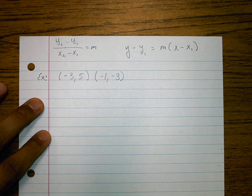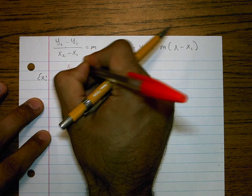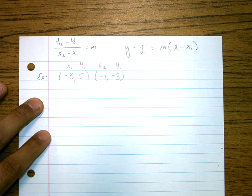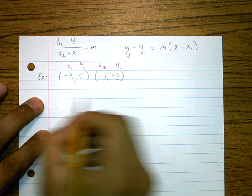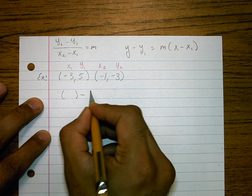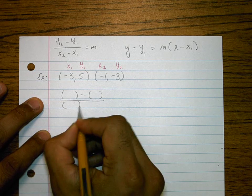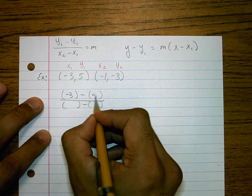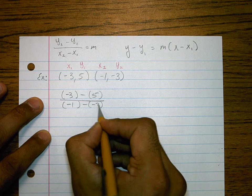So I'm going to go ahead and label this x1, y1, x2, y2. And what I'm looking at is, I like to set it up using parentheses. So it's y2 minus y1, x2 minus x1.